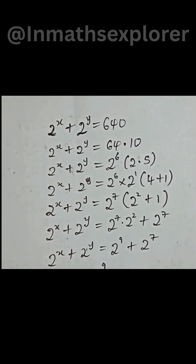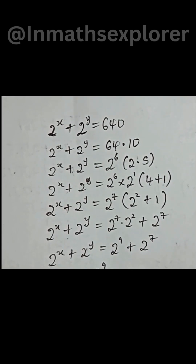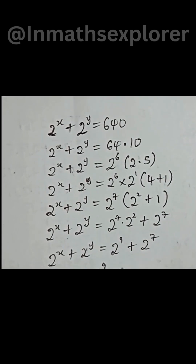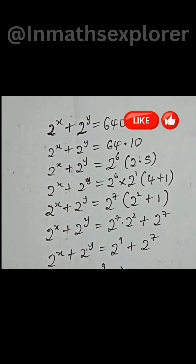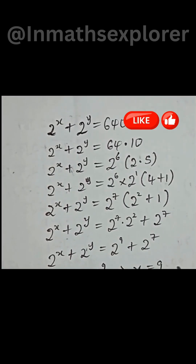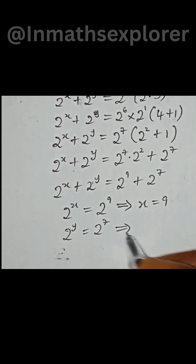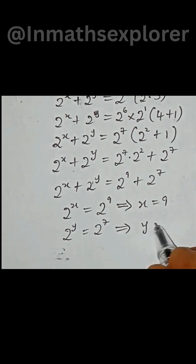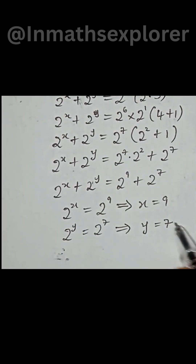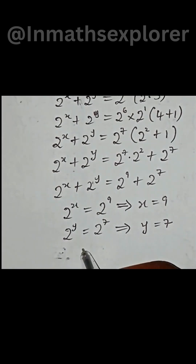Then 2 to the power of y equals 2 to the power of 7. If we equate the exponents, we have x equal to 9, and y equal to 7 as our values of x and y.